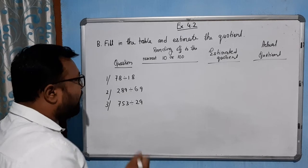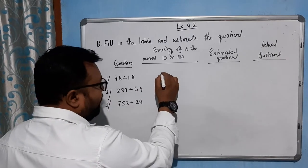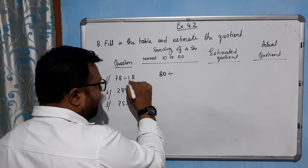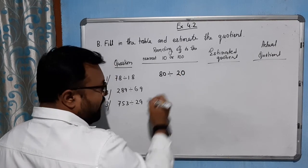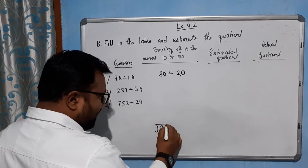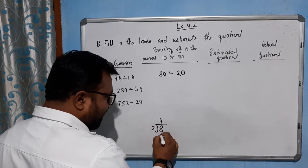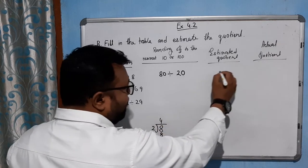Let's see: 78 will be rounded up to 80 divided by 18 will be rounded up to 20. You can say it's very easy: 80 divided by 20, that's 8 divided by 2, which equals 4.